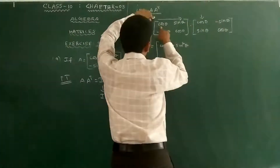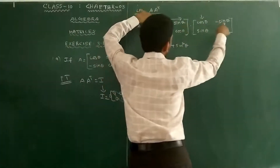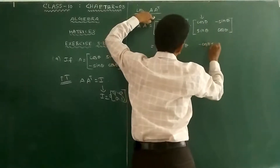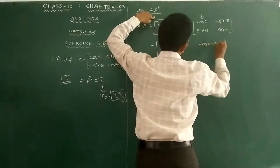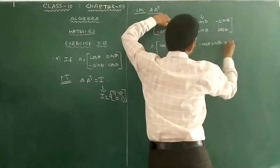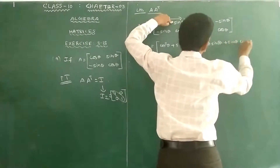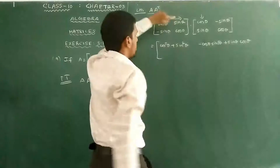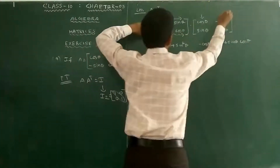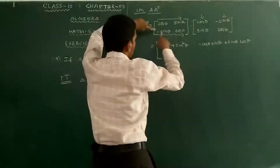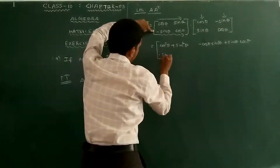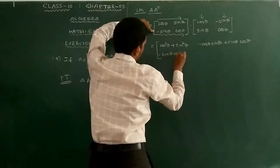For the first row, second column: cos θ into (−sin θ) gives −cos θ sin θ, and sin θ into cos θ gives +sin θ cos θ, which cancel to give 0. For the second row, first column: −sin θ into cos θ gives −sin θ cos θ.